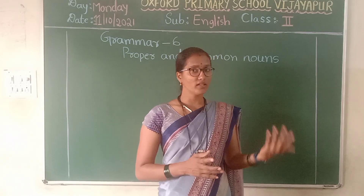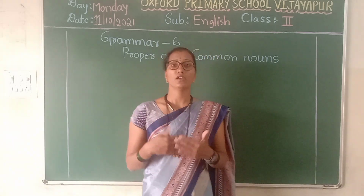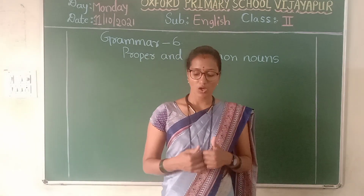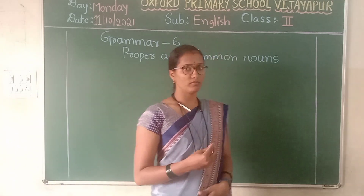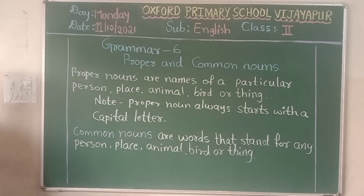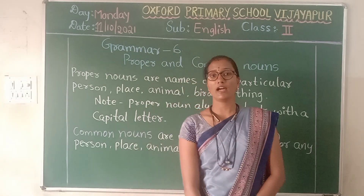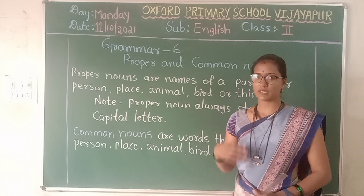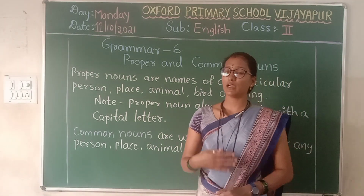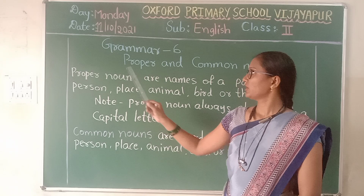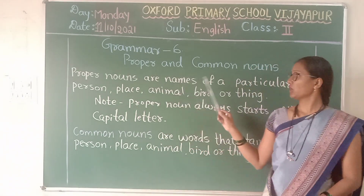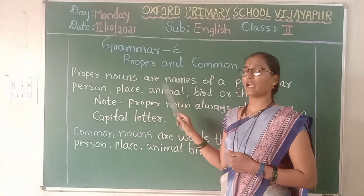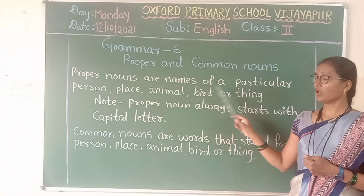Now children, I will write the definitions and give you the examples. Then we will read and I will explain how they are different from each other. All of you open your grammar noun book and write along with me. Here I have written the definition of proper nouns and common nouns. Let us read it first, then I will explain. Proper nouns are names of a particular person, place, animal, bird or thing.